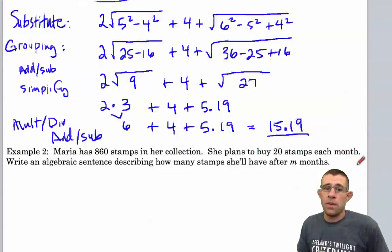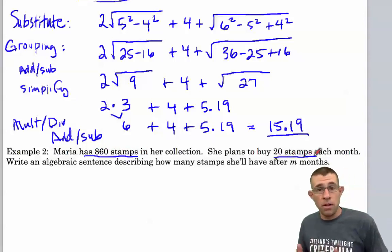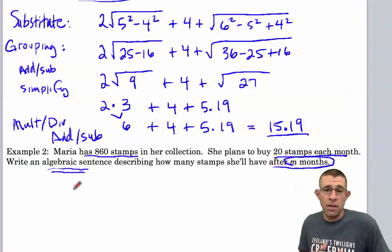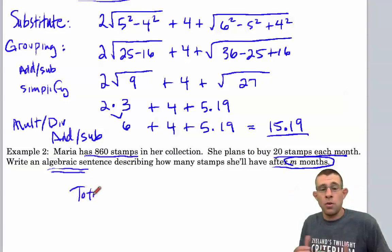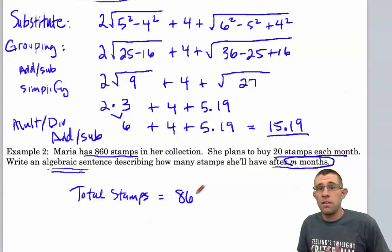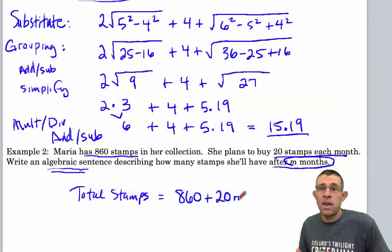All right, in our next example, Maria has 860 stamps in her collection. She plans to buy 20 stamps each month, and we want to write an algebraic sentence. Now remember, a sentence has a verb in it, such as equals to or greater than or less than. So we'll say our total number of stamps that Maria has is equal to how much she starts off with, 860, plus 20 times each month that she adds in additional stamps.